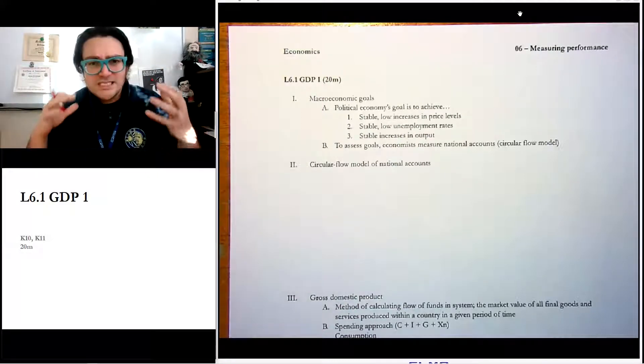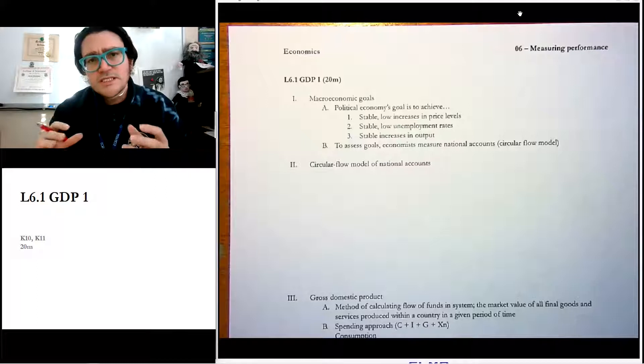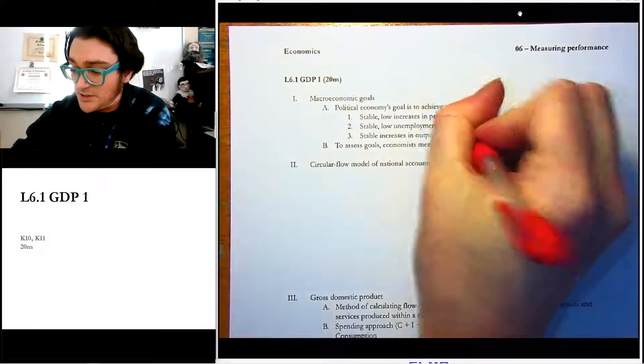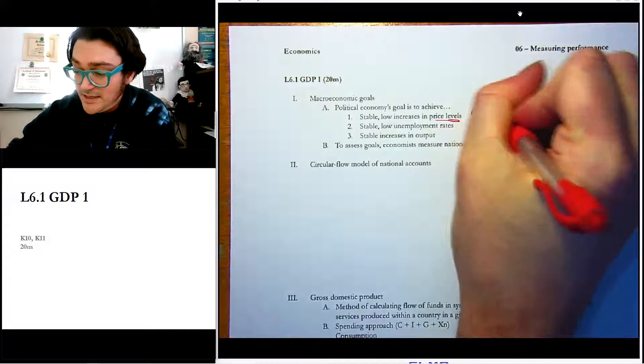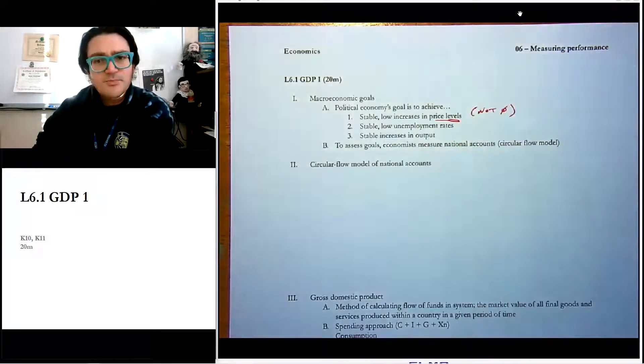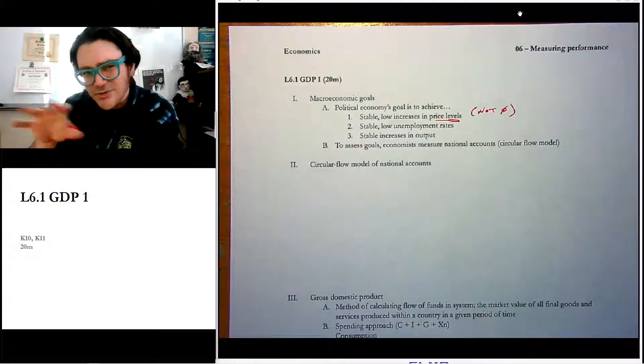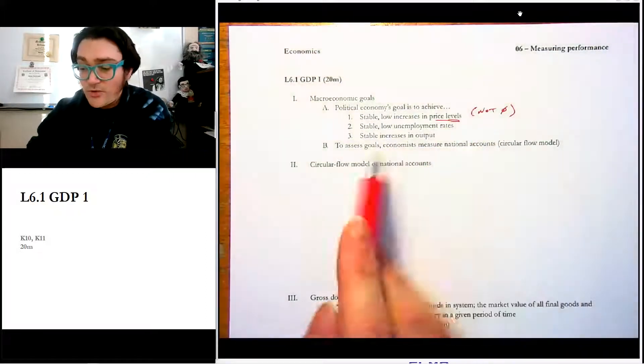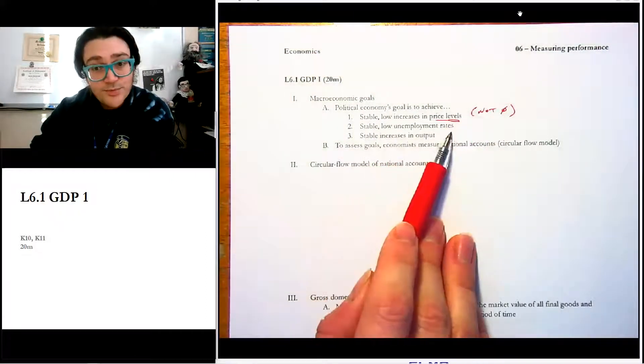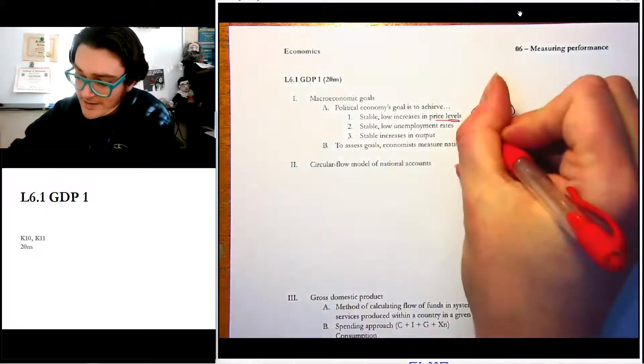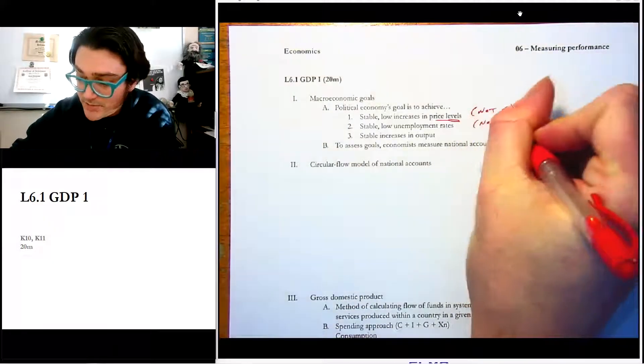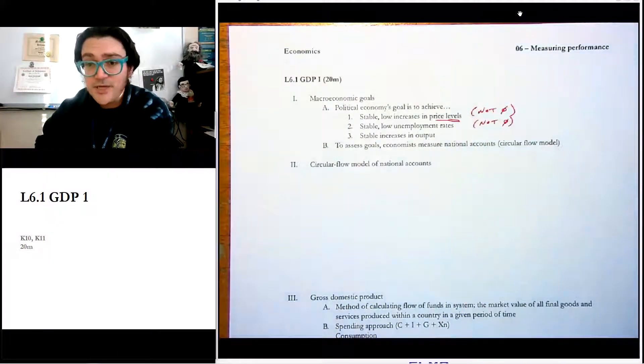The first goal is stable, low increases in price levels. Notice that I say levels here, that's important. And we'd say not to zero. It'll become apparent later why zero is not good. Second goal would be stable, low unemployment rates, and that's again, not to zero. That will become apparent next topic, actually.